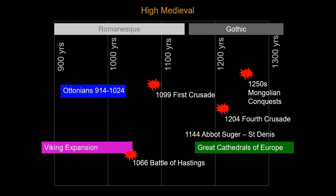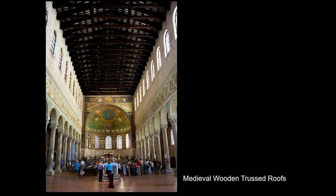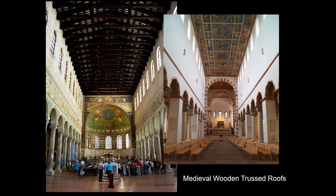One of the things that changes as we move toward the year 1000 is the recovery of vaulting technology. Early Christian basilicas had wooden truss roofs — flat roofs made of wooden timbers and beams. This is Saint Apollinare in Classe, and here's Saint Michael's at Hildesheim from the Carolingian and Ottonian period, which also has a flat wooden roof with panels.